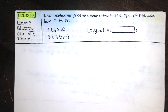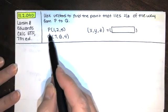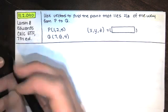We're asked to use vectors to find the point that lies two-thirds of the way from P to Q. We are given these coordinates for P and these coordinates for Q.